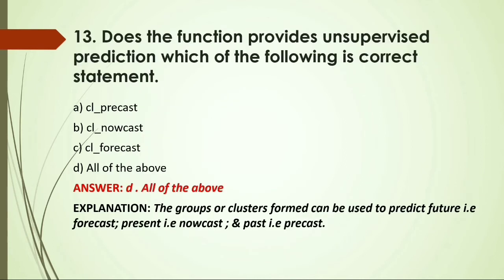MCQ: Does the function that provides unsupervised predictions — which of the following is the correct statement? Options: A) Precast; B) Nowcast; C) Forecast; D) All of the above. Answer: D, all of the above, because the groups or clusters formed can be used to predict the future (forecast), present (nowcast), and past (precast).